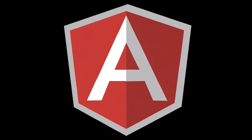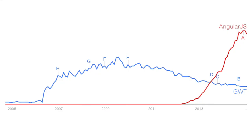AngularJS has changed things quite a bit on the market. This red line here is AngularJS — they started to gain traction around 2012-2013, and in a couple of years they basically surpassed GWT. Now they are around four times the popularity of GWT if you're just measuring Google Trends.